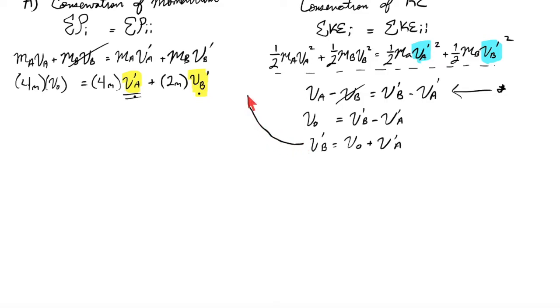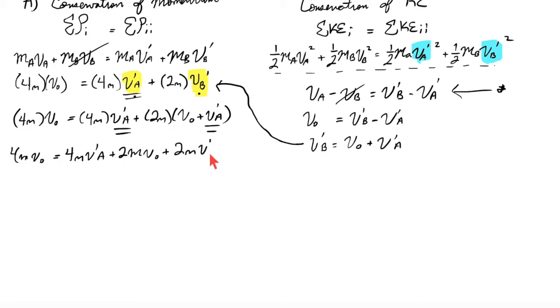V prime of B will be equal to V0 plus V prime of A. So this here, I'm going to slot right in there. Now, let's rewrite this with the new substitutions. 4M V0 is equal to 4M V prime of A plus 2M, not V prime of B anymore, but rather V0 plus V prime of A. Now,